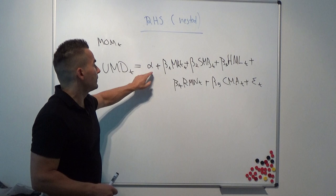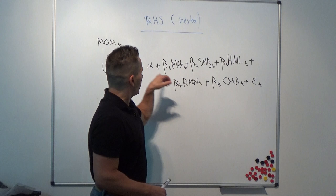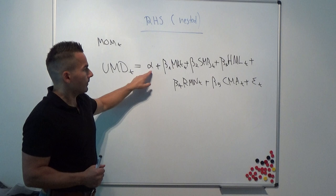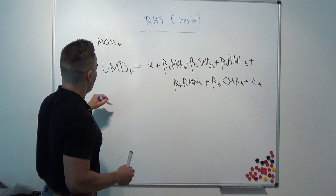The alpha and epsilon belong together: alpha captures the systematic part of what is unexplained by exposures to these risk factors, while epsilon captures the unsystematic, idiosyncratic part. Alpha captures the systematic mispricing, and this is what we are most interested in.